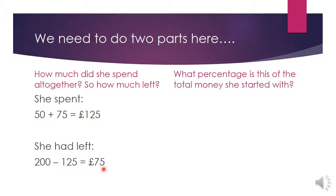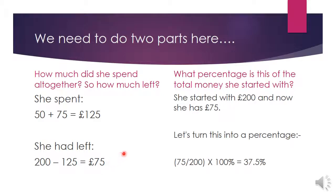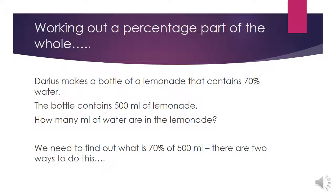The next part is to work out what percentage £75 is of the total money she started with. She started with £200 and now has £75, so we can turn this into a percentage. Remember, first turn it into a fraction: 75 out of 200. Then multiply by 100. 75 divided by 200 multiplied by 100 gives us 37.5%.